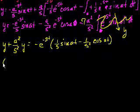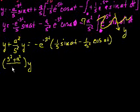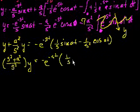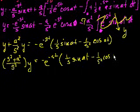And so we can add the coefficient, so we get 1 plus a squared over s squared times y. But that's the same thing as s squared over s squared plus a squared over s squared. So it's s squared plus a squared over s squared y is equal to minus e to the minus st times this whole thing, 1 over s sine of at minus 1 over s squared cosine of at.